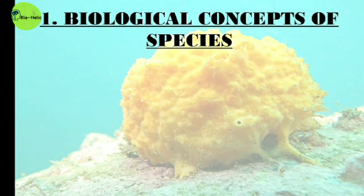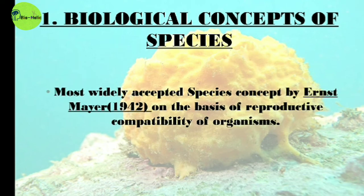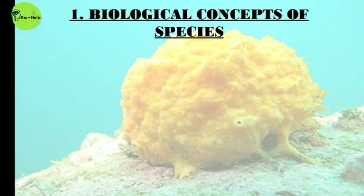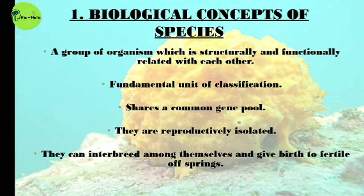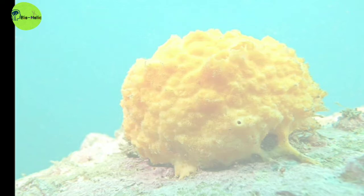The Biological Species Concept is the most widely accepted species concept, given by Ernst Mayr in 1942, based on reproductive compatibility of living organisms. According to him, a species is a group of organisms which are structurally and functionally related and form the fundamental unit of classification. They share a common gene pool, are reproductively isolated from other species, but can interbreed among themselves and give birth to fertile offspring.